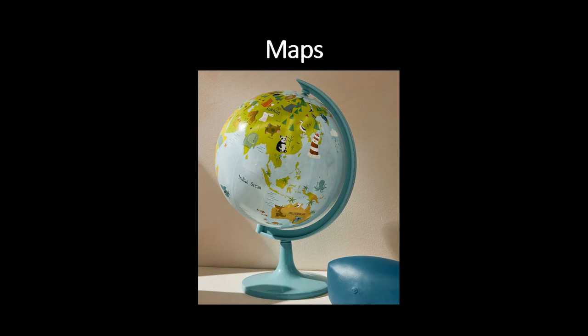A map shows us where we are and where we need to go. They show us what is around us. I have found some pictures of some maps that I would like to show you. The first picture I have is of a globe. A globe is round like a ball, and it is in the shape of the Earth. It shows us where countries are, where continents and oceans are.